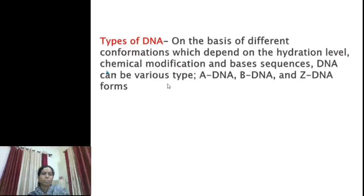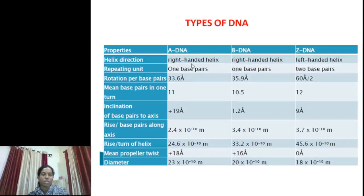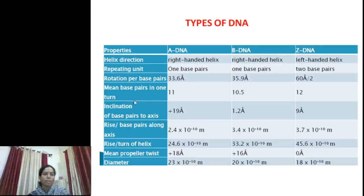There are various types of DNA depending on the hydration level, chemical modification, and base sequence. This table shows different types of DNA: A-DNA, B-DNA, and Z-DNA. The DNAs vary in characteristics like helix direction, repeating unit, rotation per base pair, inclination, rise per base pair along the axis, turns of the helix, mean propeller twist, and diameter.